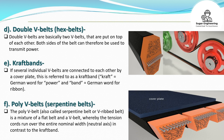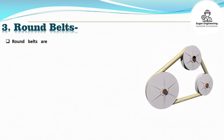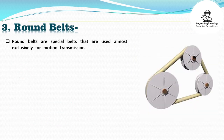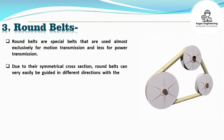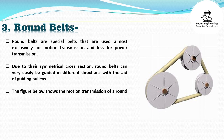Round belts: Round belts are special belts used almost exclusively for motion transmission and less for power transmission. Due to their symmetrical cross-section, round belts can very easily be guided in different directions with the aid of guiding pulleys. The figure below shows the motion transmission of a round belt for centripetal force measurement.